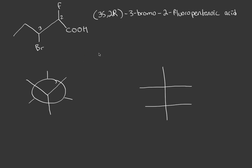In this example, the question asks us to draw the Newman projection and the Fischer projection for this molecule. The problem is not that we can't draw them, but rather we don't know how the stereochemistry of this molecule looks when it comes to the shape.